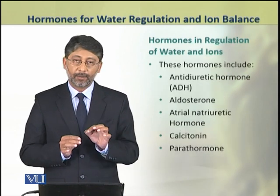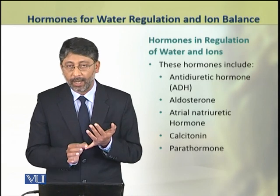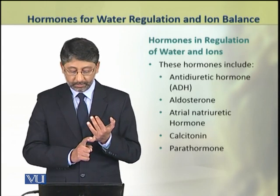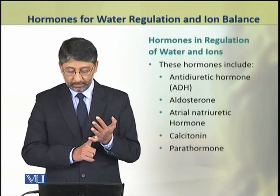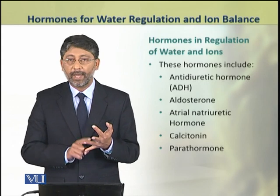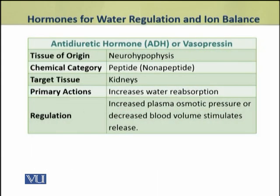These hormones include anti-diuretic hormone, aldosterone, atrial natriuretic hormone, calcitonin and parathormone. The anti-diuretic hormone or vasopressin is produced by the posterior lobe of pituitary, that is neurohypophysis. It is a peptide hormone which has nine amino acids. Its target tissues are the kidneys, and it increases water reabsorption from urinary filtrate. This hormone plays the most important role in water regulation.